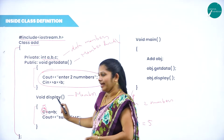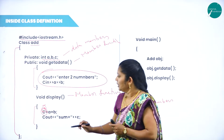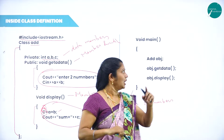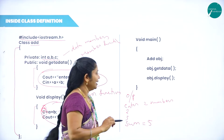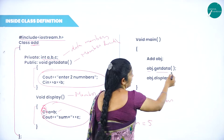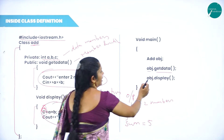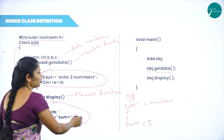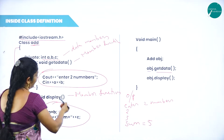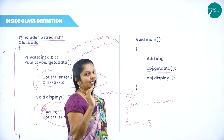These are the two functions — get_data and display. Data members are A, B, C and the class name is add. This is the class program — statements are written inside the class only. In the main program, void main — add object. Add is the class name, then we write the object name. Through that object, object dot get_data function is called and it will execute automatically. Then object dot display — the display function will execute automatically. Inside class definition means both get_data and display function statements are written inside the class only.